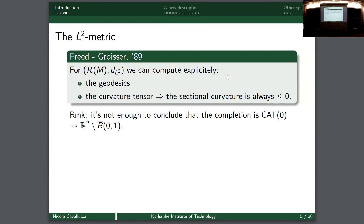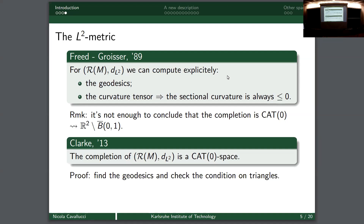Of course this is not enough - recall the title says the completion is CAT(0). It's not enough to just have non-positive sectional curvature to guarantee the completion is CAT(0), because it's true that a complete Riemannian manifold with sectional curvature ≤ 0 is locally CAT(0), but if it is not complete this is no longer true. Think of this example: take ℝ² minus one ball with the restriction of the Euclidean metric - the curvature is flat (non-positive), but the completion is not CAT(0) because it's not simply connected.